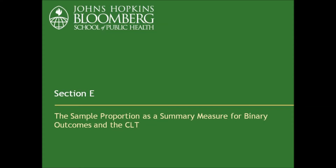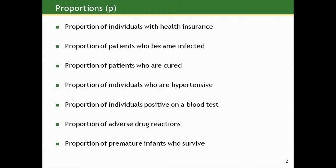Now, let's turn our attention to a different type of data outcome. Instead of looking at continuous measures, we'll finally get beyond blood pressure and length of stay. We're going to look at binary measures, and we're going to look at the sample proportion as a summary measure for binary outcomes, and we'll look at the role of the central limit theorem with that.